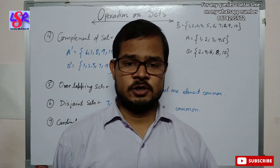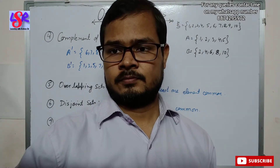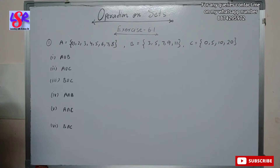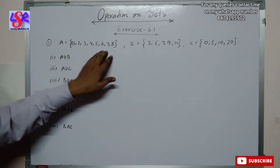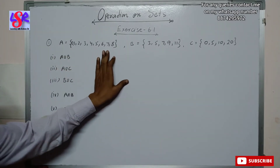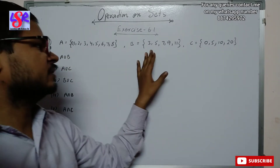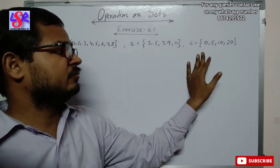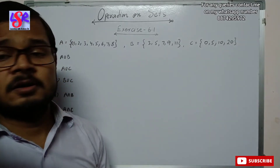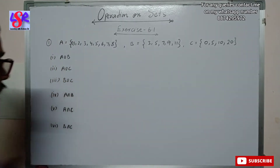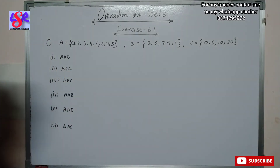Let's move to question number one of Exercise 6.1. We are given Set A = {0, 1, 2, 3, 4, 5, 6, 7, 8}, Set B = {3, 5, 7, 9, 11}, and Set C = {0, 5, 10, 20}. First of all, we have to find A union B, A union C, and B union C.